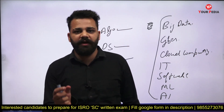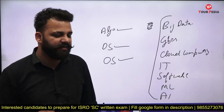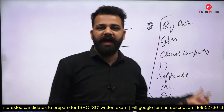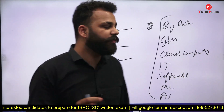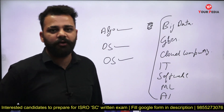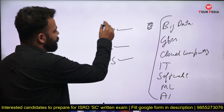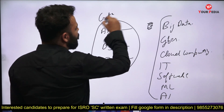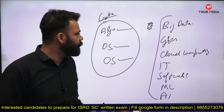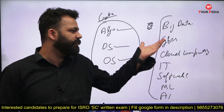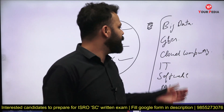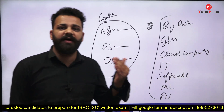Now they have removed that line about allied topics from the notification, but they are still allowing students from these allied branches to enroll for the test. This means questions from these allied subjects will still be present in the exam. These subjects are also covered when you prepare for GATE. You don't need in-depth knowledge, but a basic understanding is important — even 10 to 15 questions from these topics carry huge weightage in a 100-mark exam.